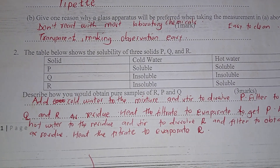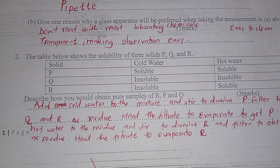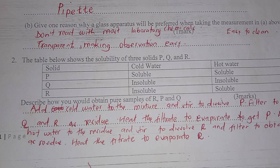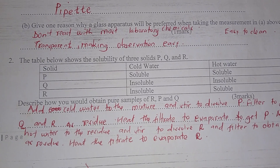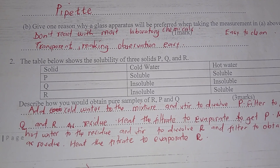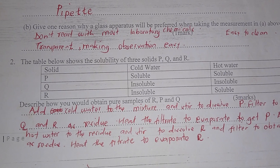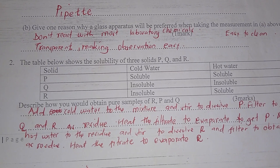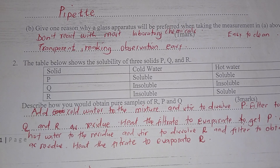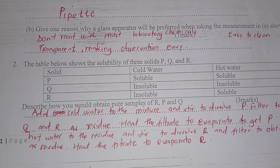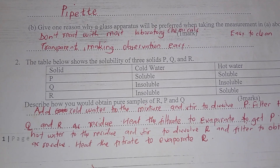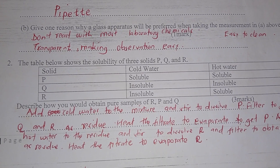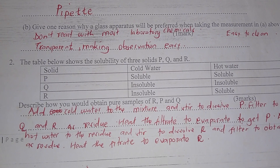Question 2: the table below shows the solubility of three solids — P, Q, and R — in cold water and also in hot water. P is soluble in cold water and soluble in hot water. Q is soluble in cold water and soluble in hot water. R is soluble in cold water and soluble in hot water. Describe how you would obtain pure samples of R, P, and Q.